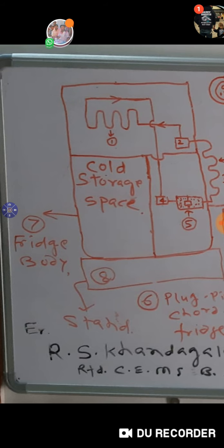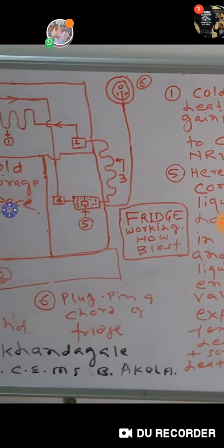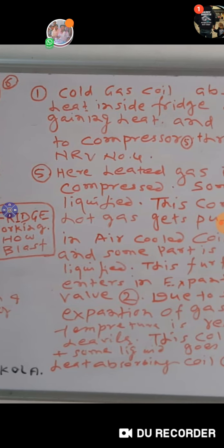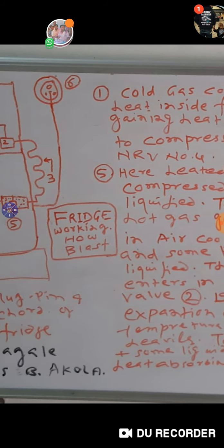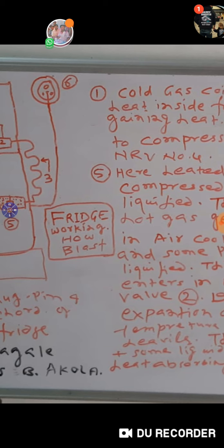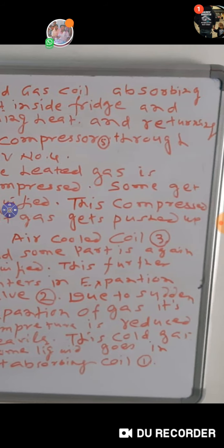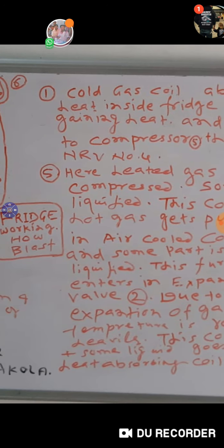This is a schematic diagram. One number is cold gas coil absorbing heat inside the fridge and gaining heat and returning to compressor number 5 through NRV number 4. Now I will explain on the diagram.